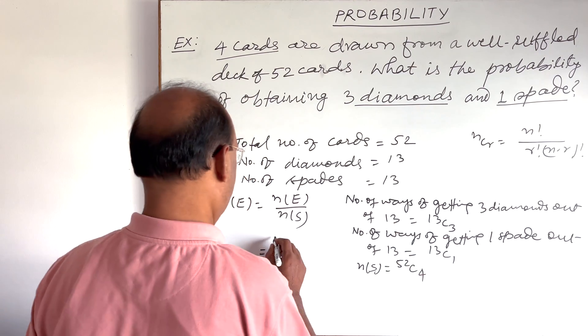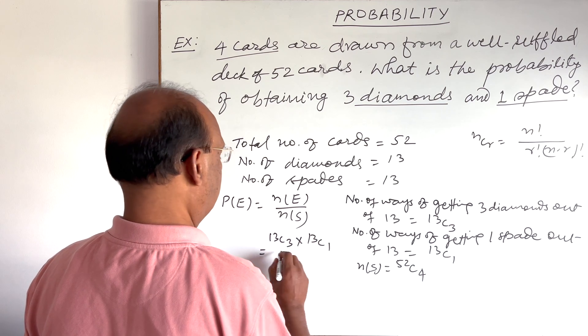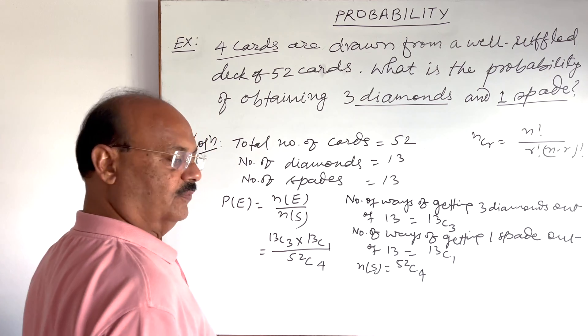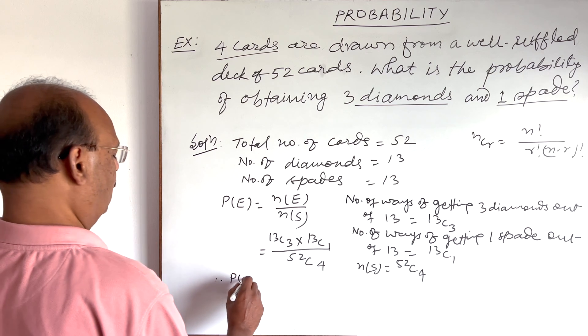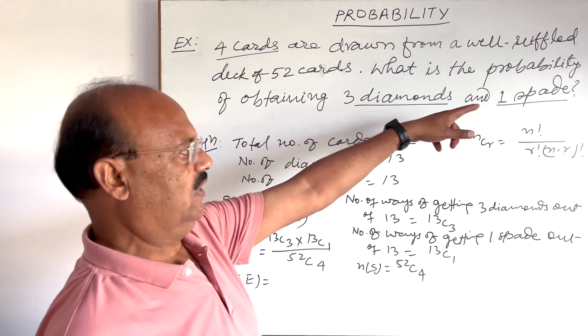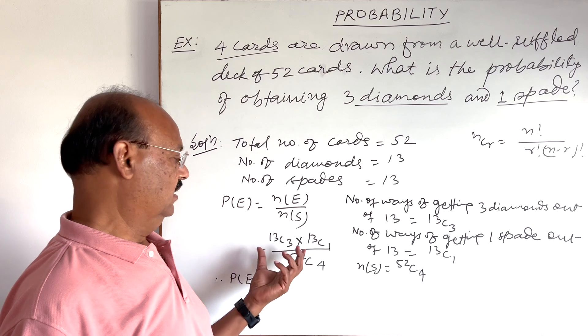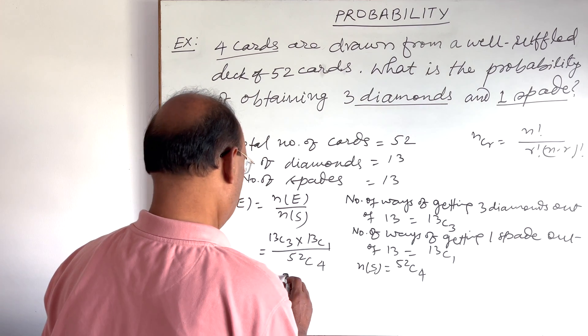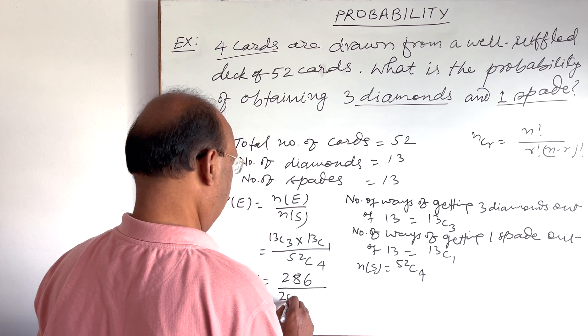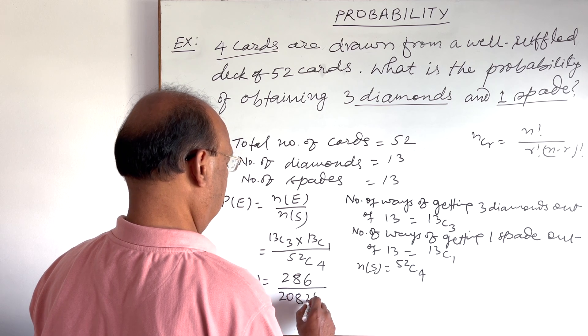So P(E) is equal to n(E) by n(S). Here n(E) will be 13C3 into 13C1 divided by 52C4. So therefore, probability of getting three diamonds and one spade after simplifying it will get the answer and this is equal to 286 divided by 20,825.